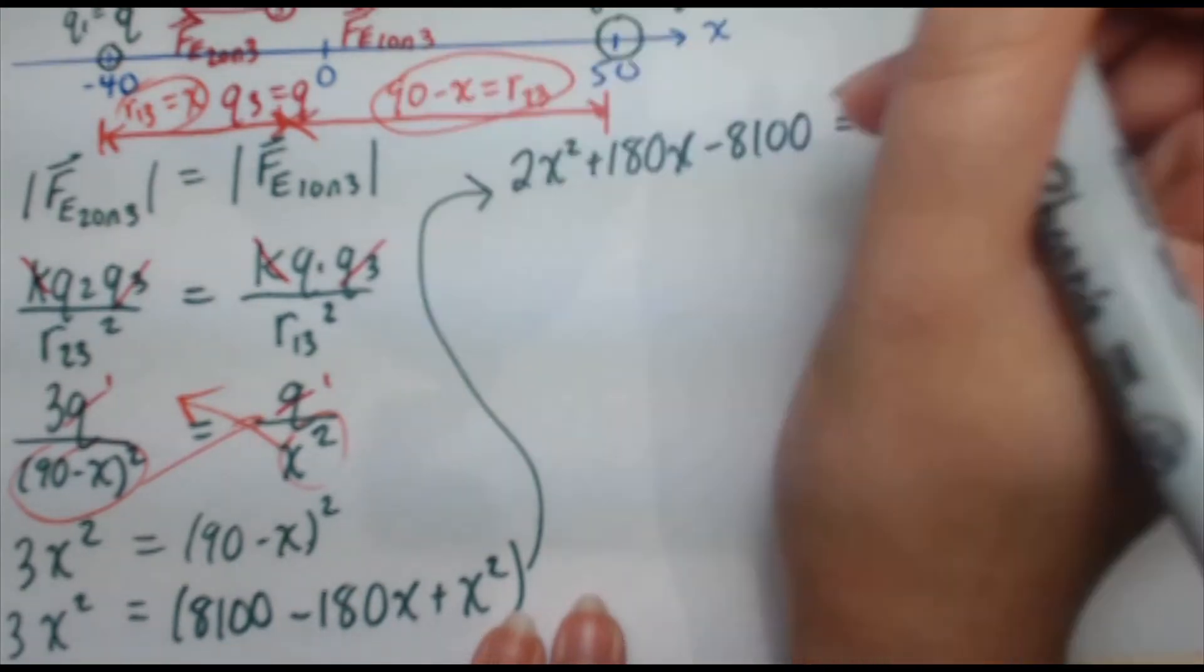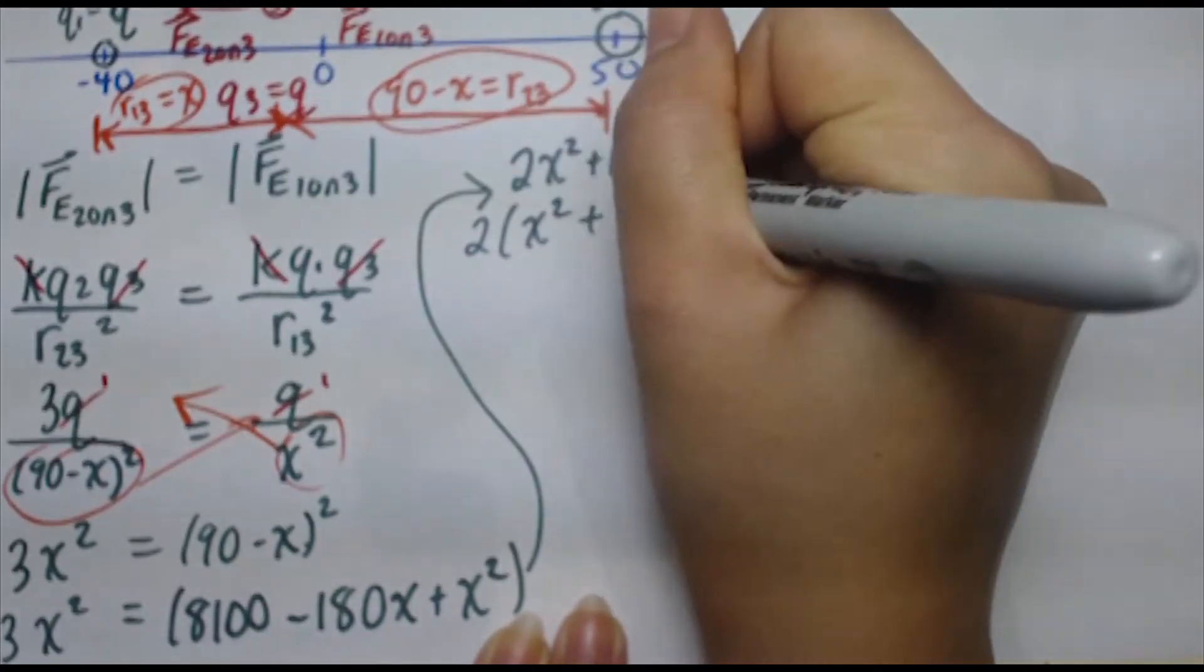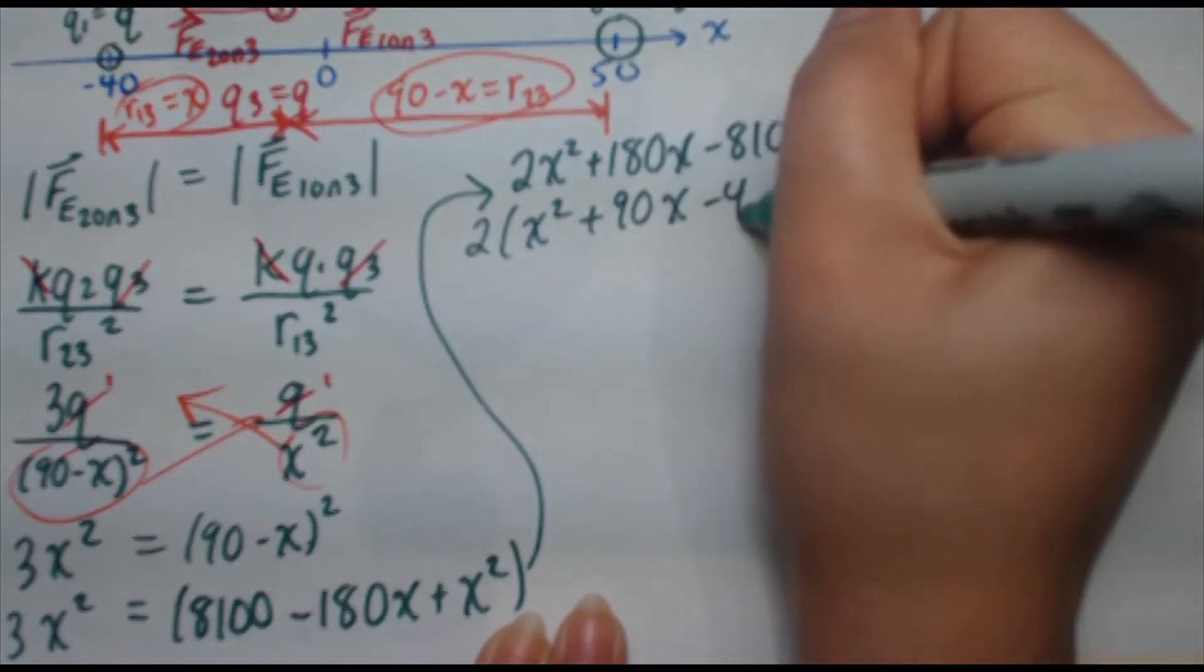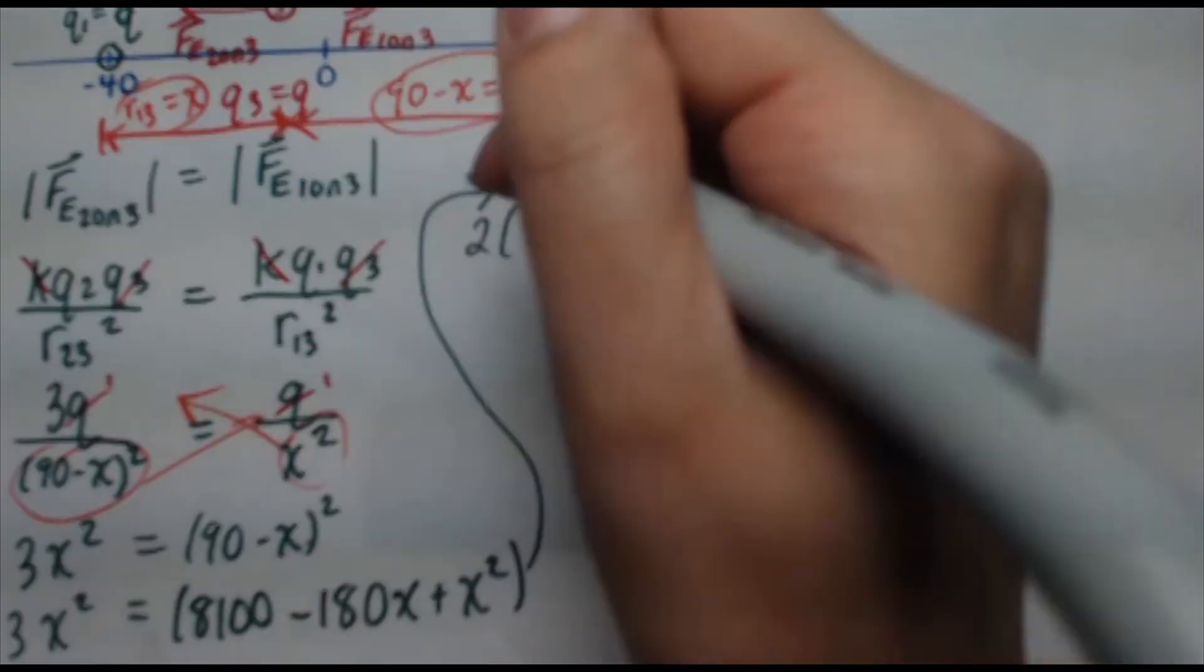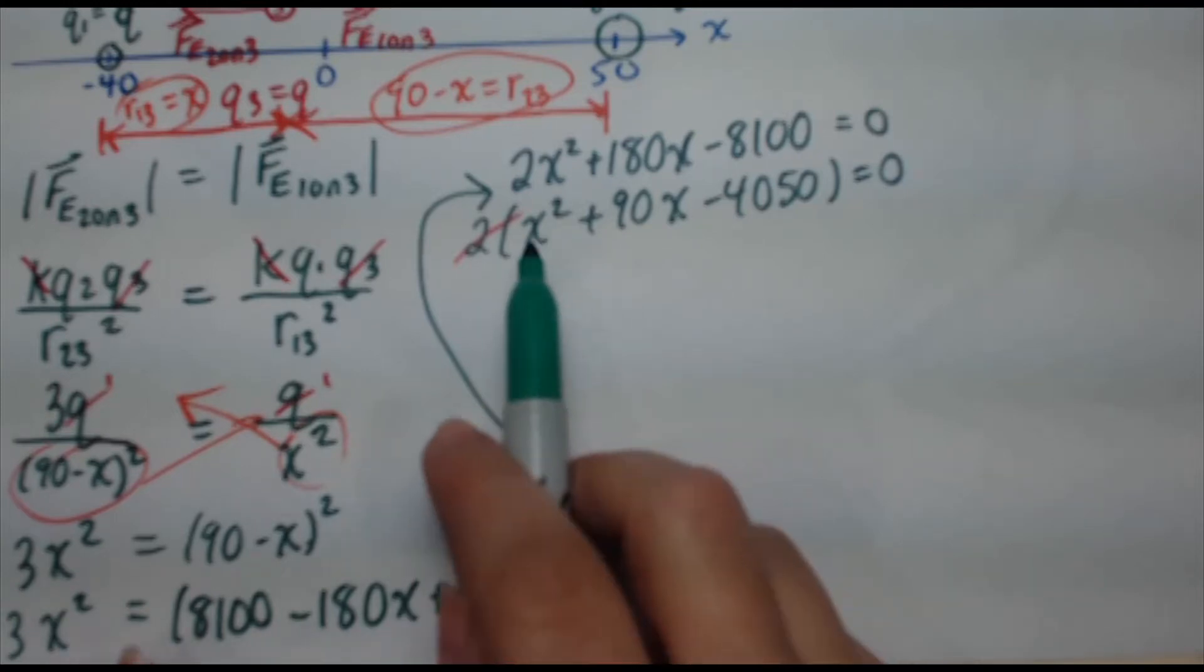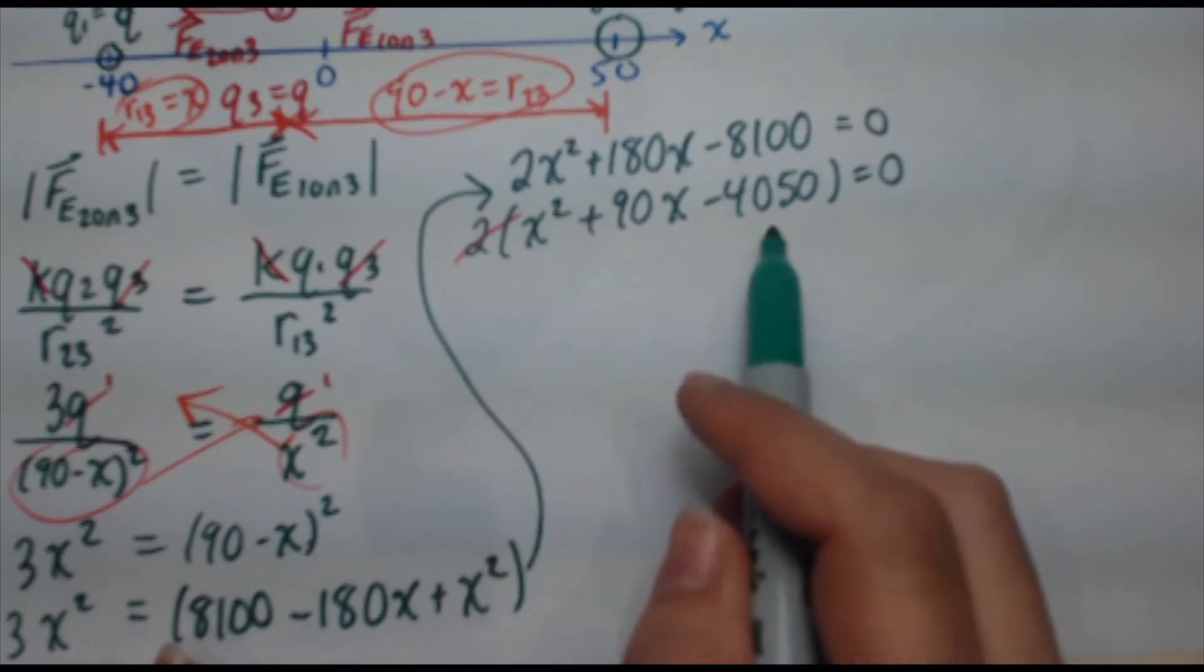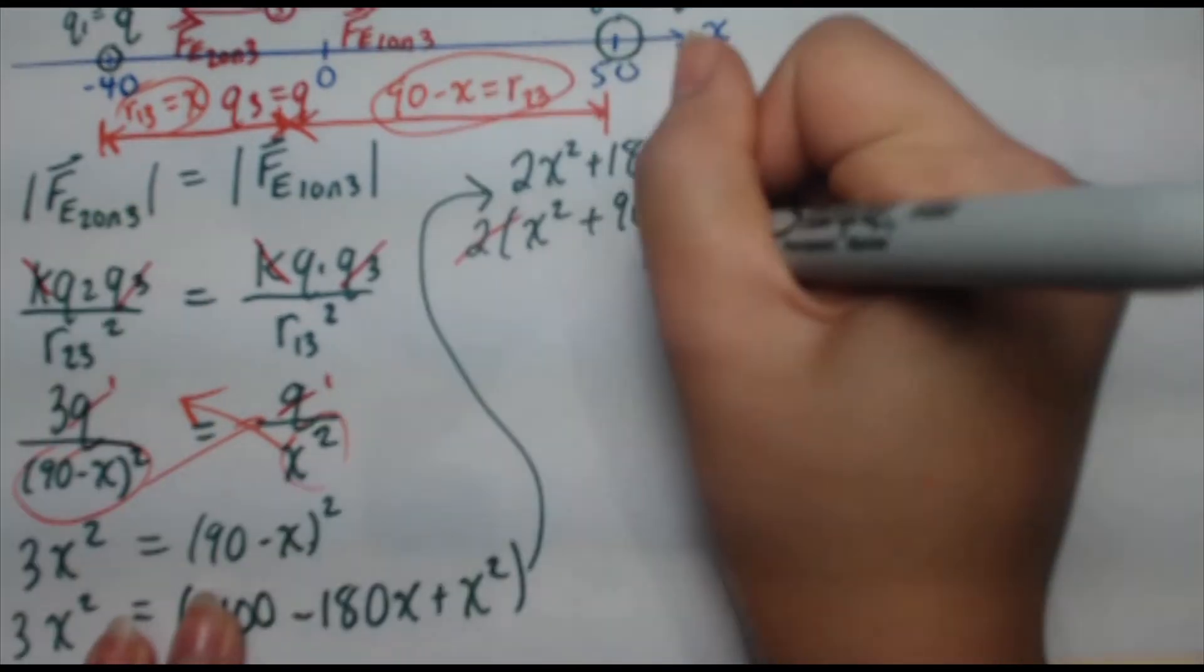So why don't we go ahead and factor out the 2, make our job a little easier. 2x squared plus 90x minus 4050. I mean, maybe it didn't simplify things too much, but it's still better than before. So we got to solve for x here, right? That's going to tell us the answer where on the x-axis this is going to be. So we can't factor this just by looking at it. So you have to use the quadratic formula.